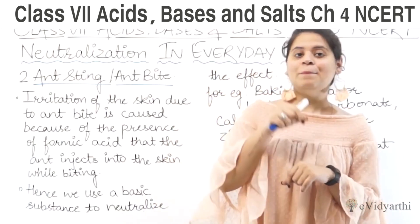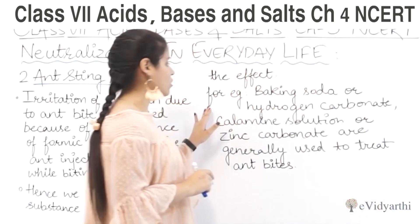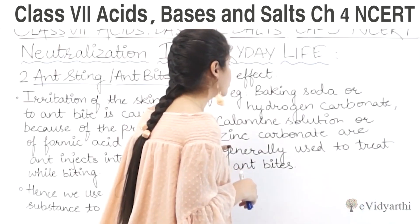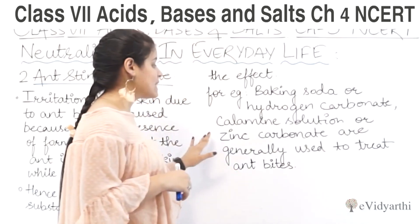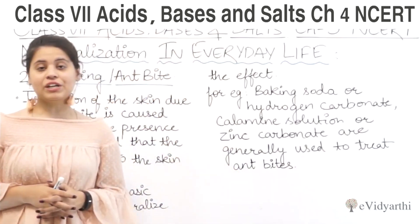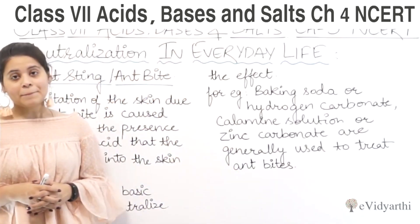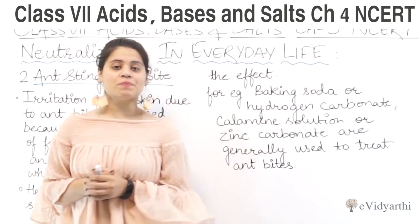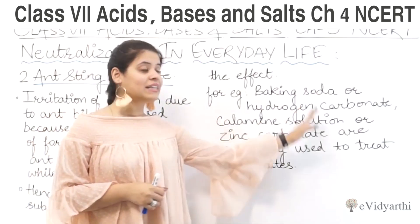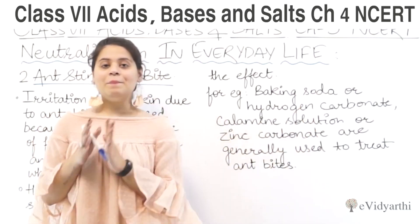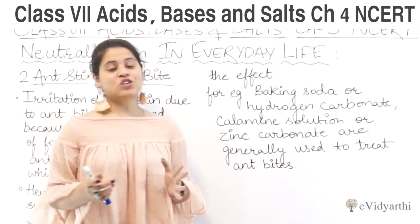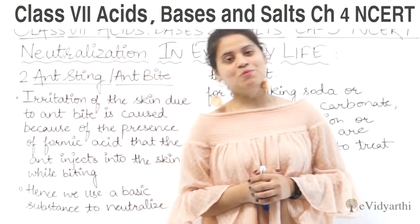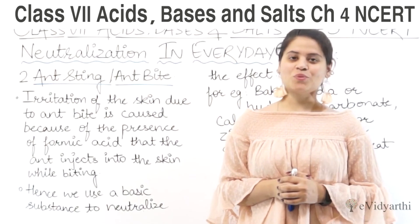We use a basic substance to neutralize the formic acid. For example, calamine solution or zinc carbonate are generally used to treat ant bites. All these substances are bases. So this is our second example of neutralization.